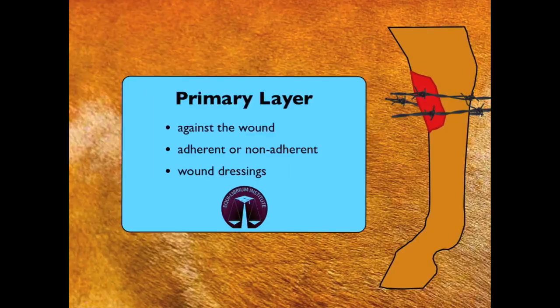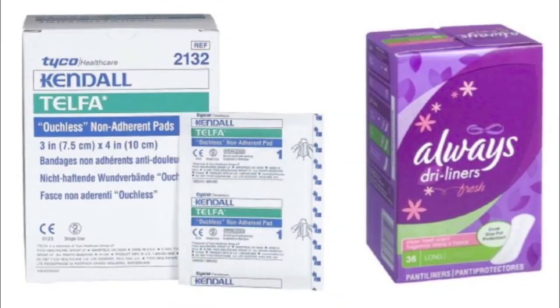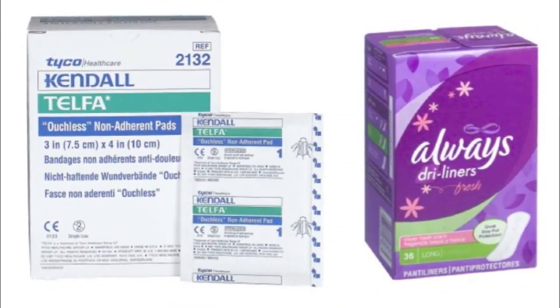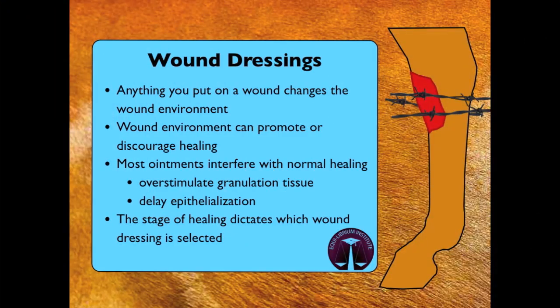The primary layer of the bandage is the layer directly against the wound. This layer can be adherent or non-adherent, and any type of wound dressing is an example of a primary layer. When selecting a wound dressing, remember that anything you put on the wound changes the wound environment, which can either promote or discourage healing. The stage of healing dictates which type of dressing should be selected. Most ointments actually interfere with the normal healing process by either overstimulating granulation tissue or by delaying epithelialization and contracture of the wound.